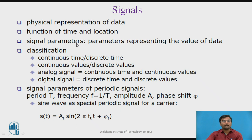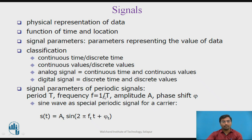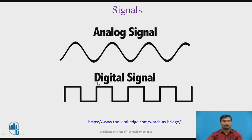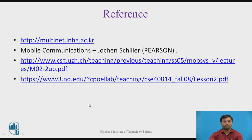A signal represents the physical representation of data — at a particular point and location, the signal parameters represent the data. Signals are divided into two types: continuous signals and discrete signals, also called continuous time and discrete time. Analog signals are continuous time with continuous values, while digital signals are discrete with discrete values — essentially on or off.